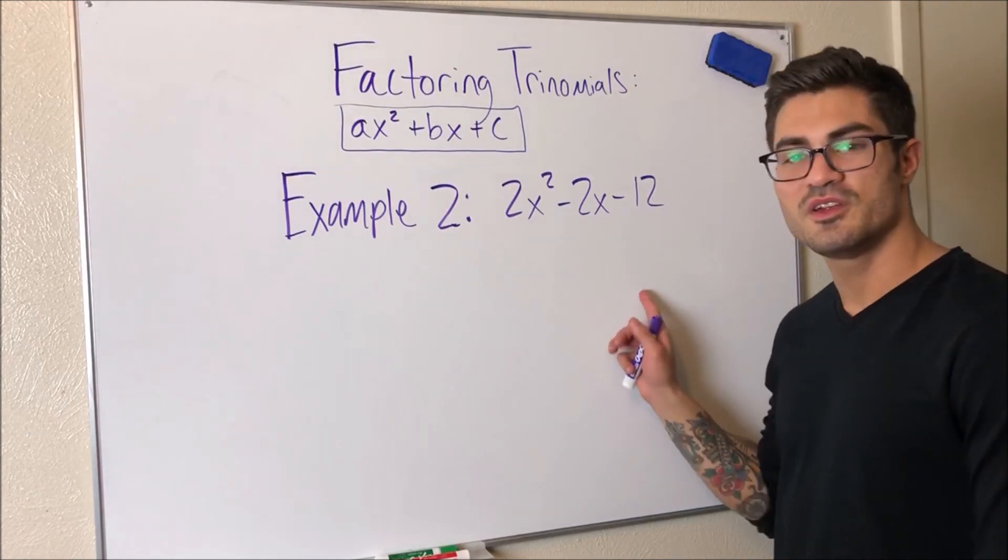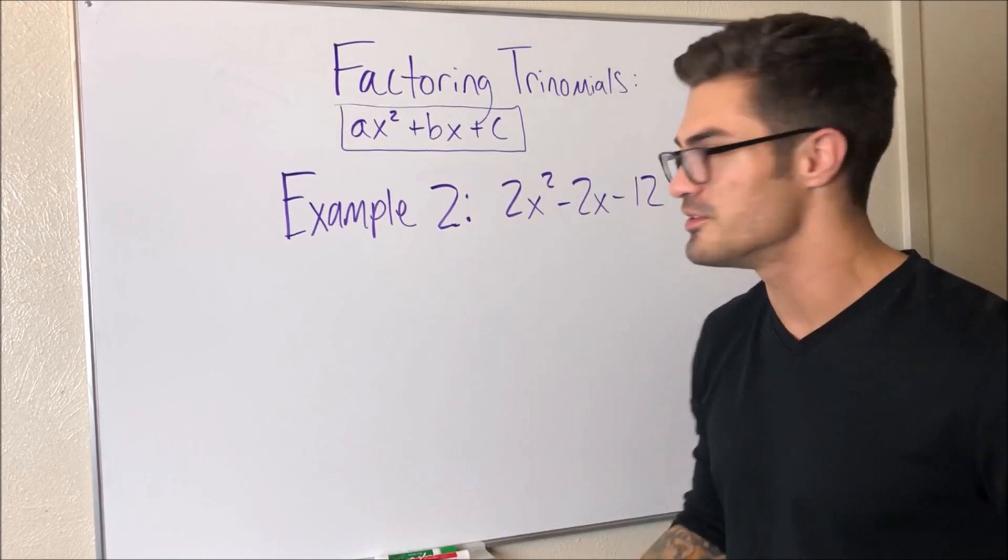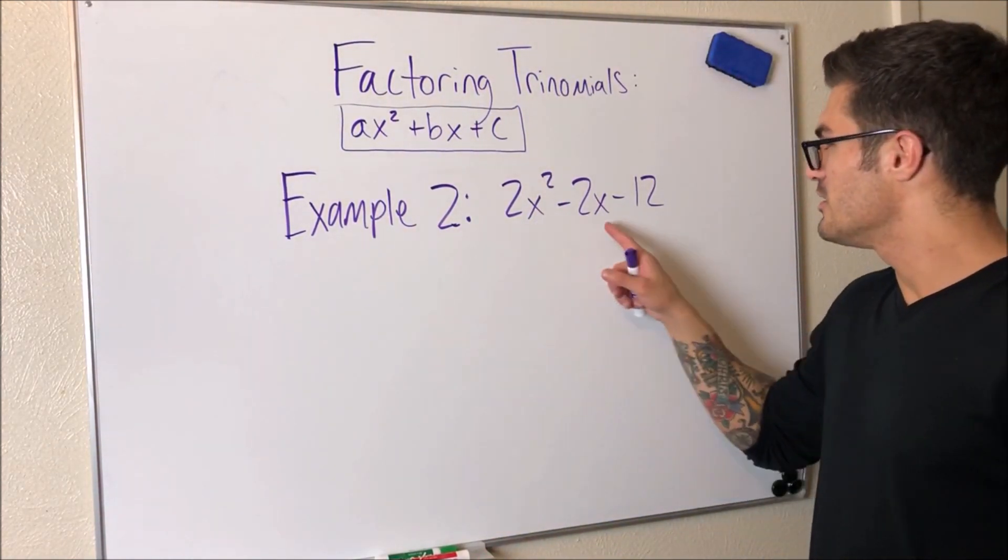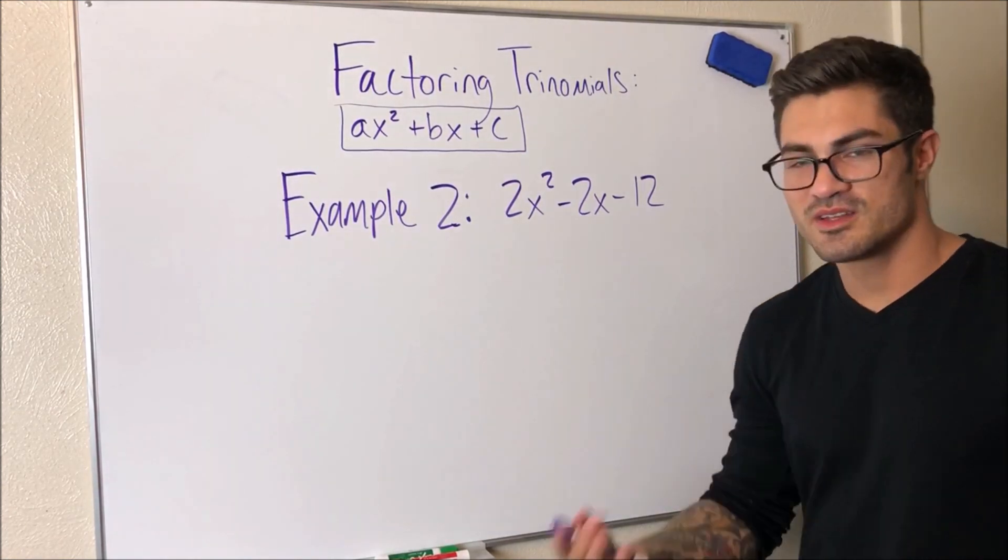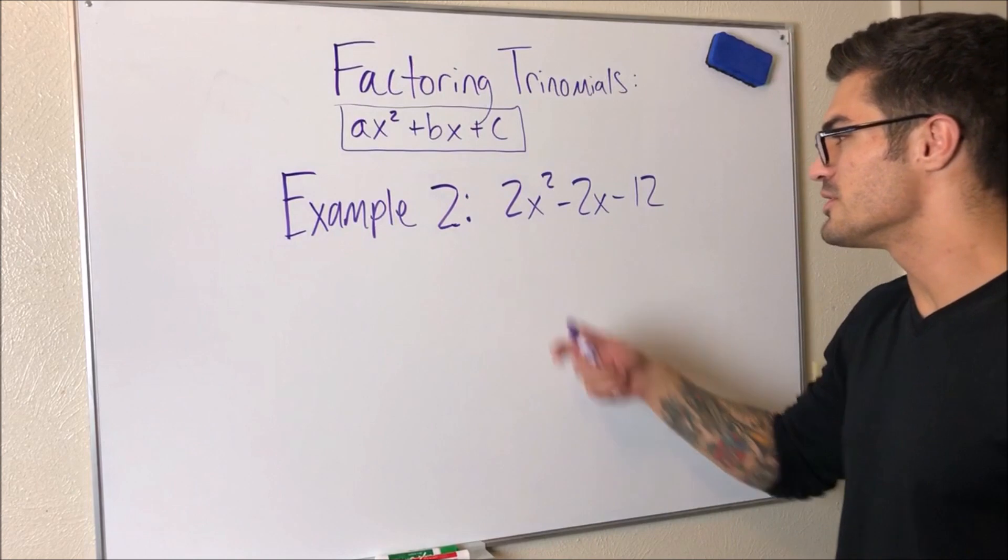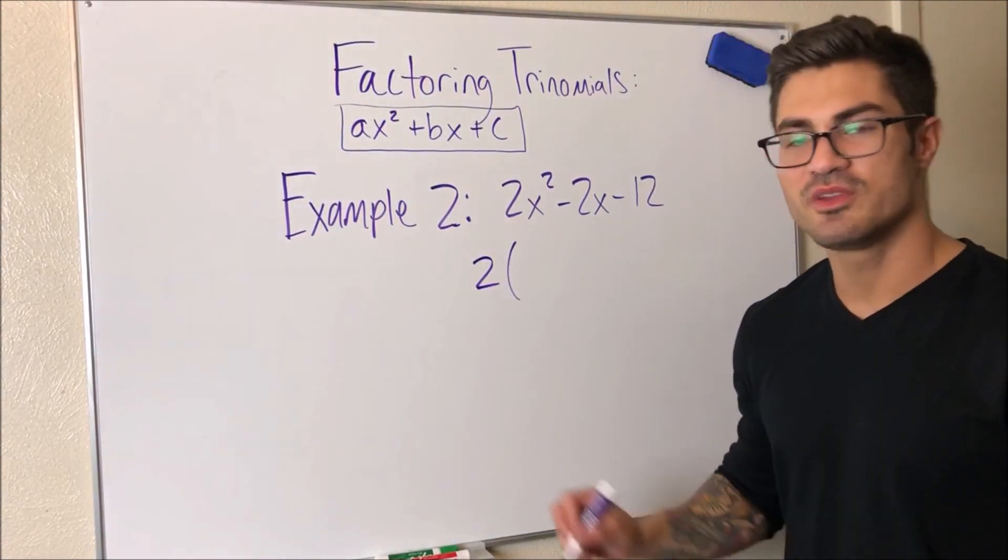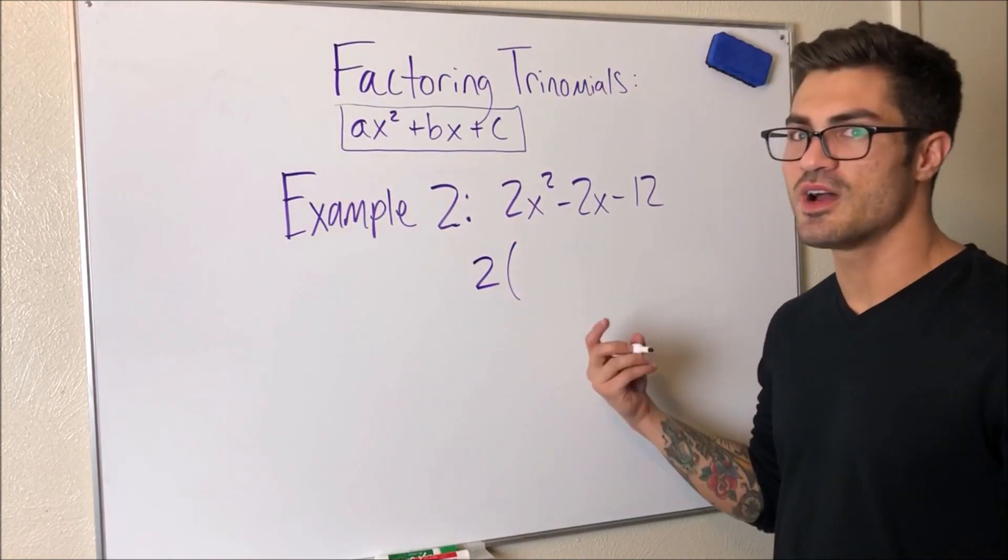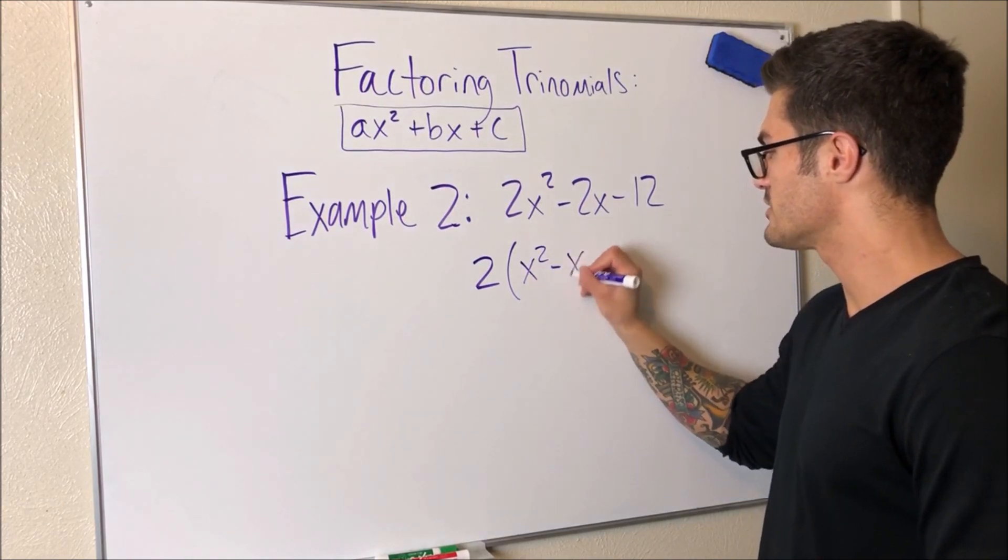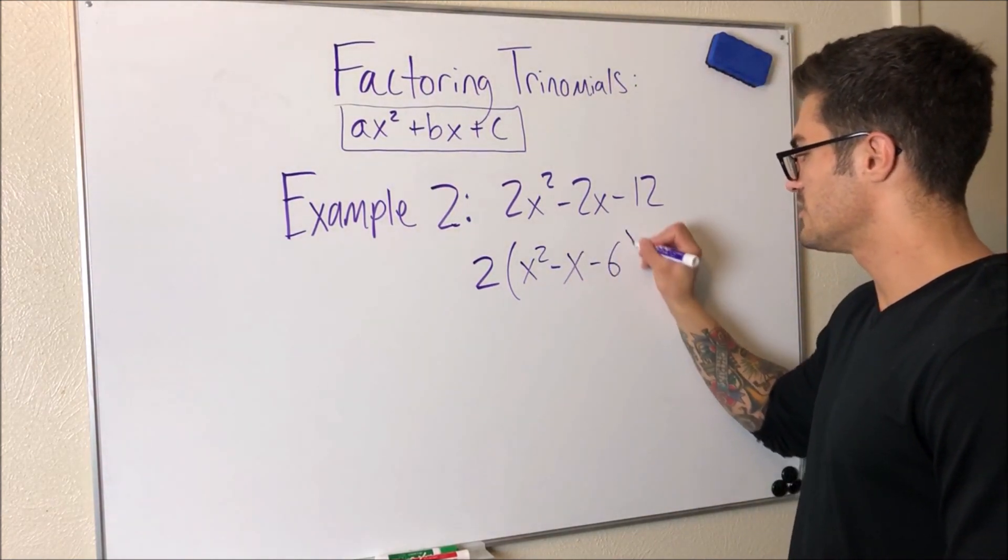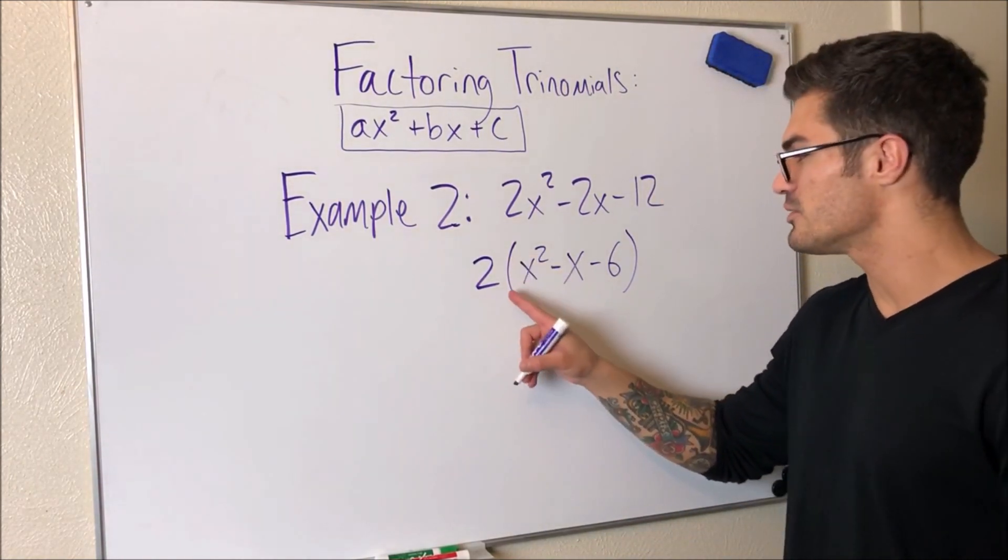And what's going to be left here in parentheses is whatever's left when we basically divide each term by that common factor. So by looking at this, I can tell that they're all even numbers, so I can definitely pull out a two. And in fact, that's going to end up being the greatest common factor. So I'm going to pull that two out. And what I'm left with here is just each term divided by two. So here's going to be x squared minus x minus six. And that's what's left. We've pulled out a two, that's the greatest common factor.